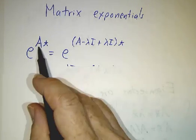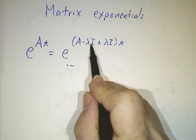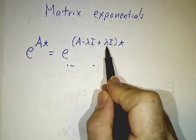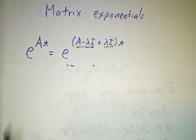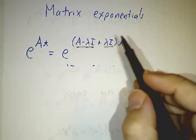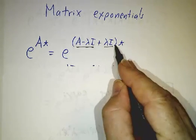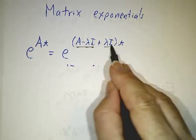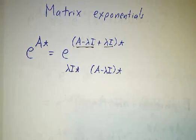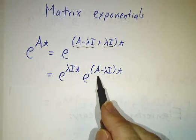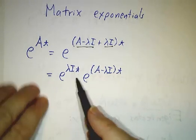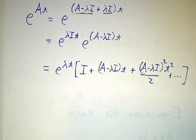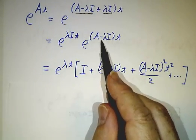For exponentials, we do something very similar. If you want to exponentiate At, you write A as A minus lambda identity plus lambda identity. And we use the fact that this matrix and this matrix commute. In general, if you have e to the sum of two matrices, it's a real mess unless the two matrices commute, in which case it just becomes e to one times e to the other. And e to the lambda I t is easy. That just gives you a factor of e to the lambda t. We get this from a power series.